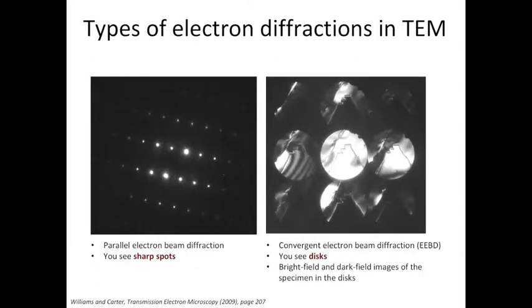When acquiring electron diffraction patterns, depending on how converged the beam is, you can either take the parallel electron beam diffraction or the convergent electron beam diffraction. From the examples shown here, you can see a typical example of the parallel electron beam diffraction on the left showing sharp spots. If you converge the electron beam when acquiring the electron diffraction pattern, you will get discs. This is called the convergent electron beam diffraction or CBED.